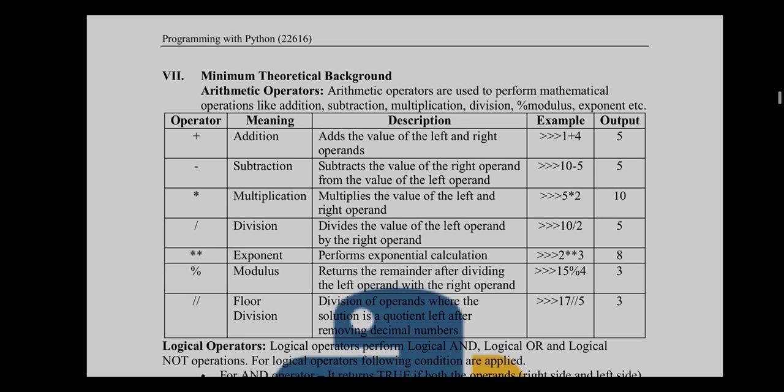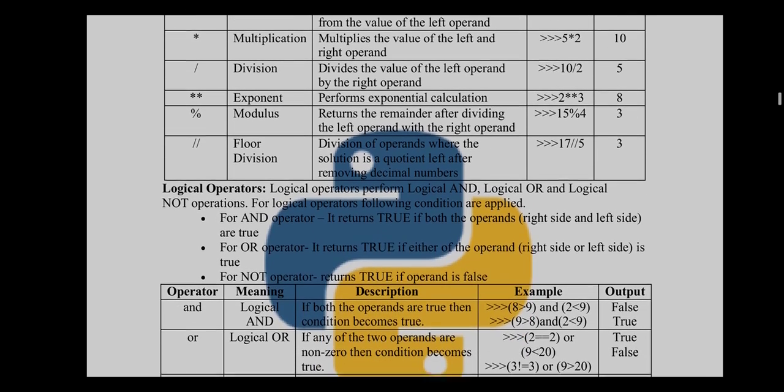Next is floor division. It performs division and returns the floor of the result. For example, 17 floor divided by 5: 17 divided by 5 gives 3.4, but floor division directly shows you the floor number, which is 3. It does not show 3.4; it shows 3.